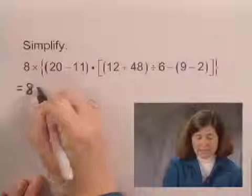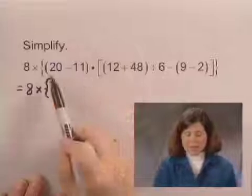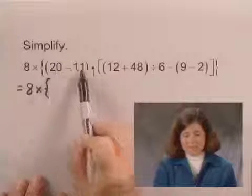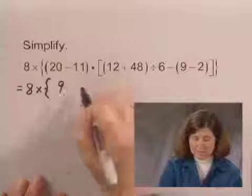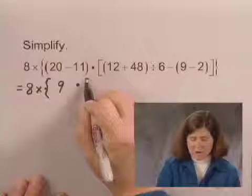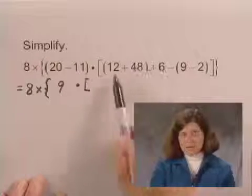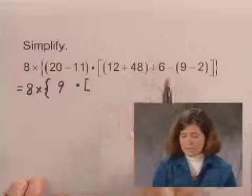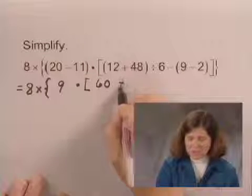I'm going to write 8 times, and I will copy the brace, and now I'm going to simplify what's inside these parentheses. 20 minus 11 is 9. I'm going to write the multiplication sign. I'll write the bracket, and now I'm going to simplify what's inside the next set of parentheses, 12 plus 48. That is 60.